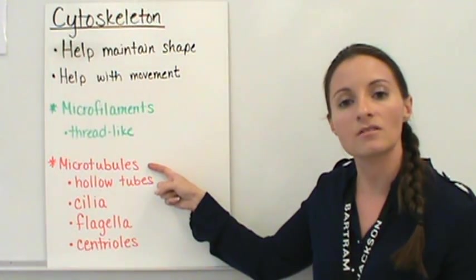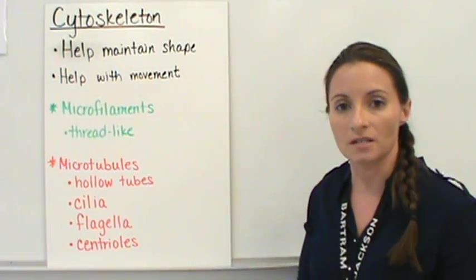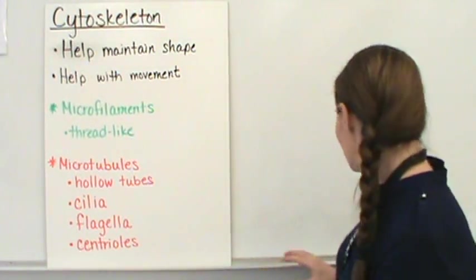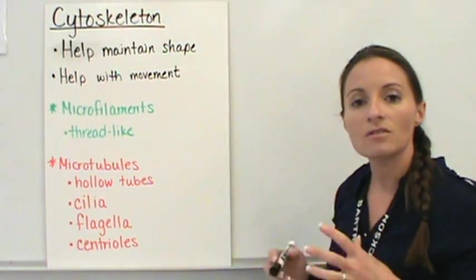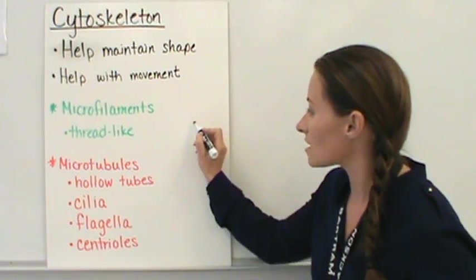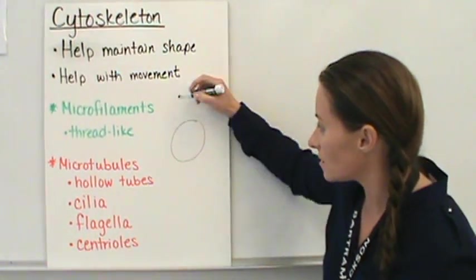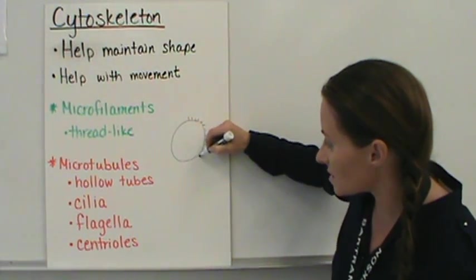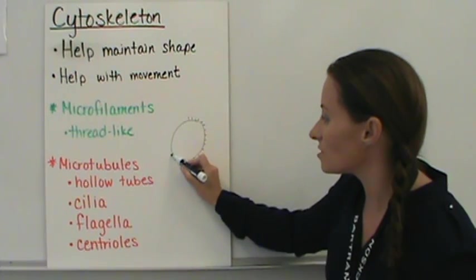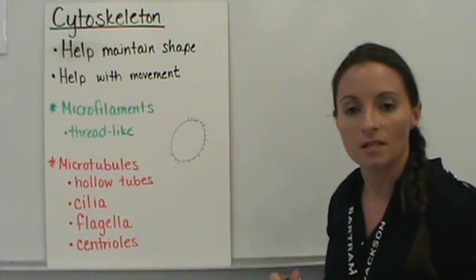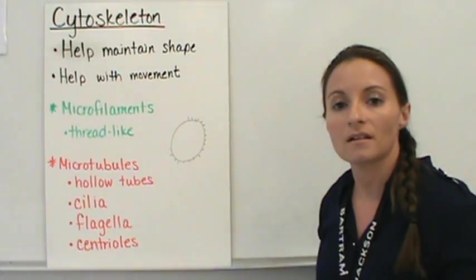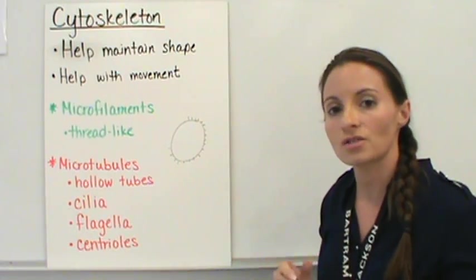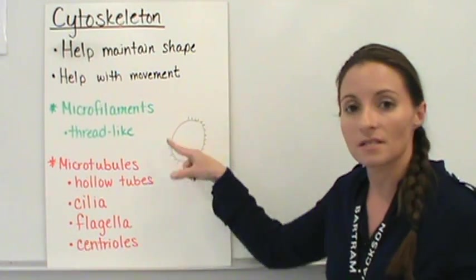The microtubules can also make up three other different types of structures within the cell. First of all, it can make up the cilia, and cilia are going to be small structures around the outside of a cell. So if we have a cell here, we might have these small hair-like structures around the outside of the cell, and the cell actually will use these to help them move around. So these small tubes that are going to be hair-like structures actually help the cell to move around.